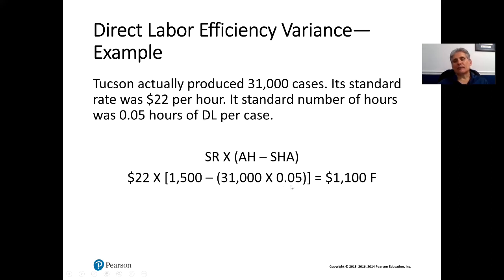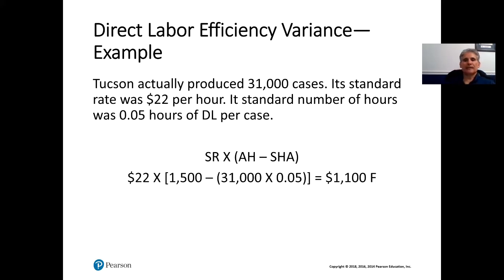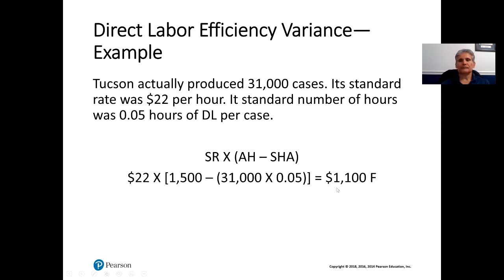Standard hours allowed equals 31,000 cases multiplied by 0.05 hours per case, giving us 1,550 hours. So we were expecting to use 1,550 hours, but the actual hours was 1,500 — we used fewer hours than expected, which means we were more efficient. That difference of 50 hours times $22 per hour gives us $1,100 favorable, because we used less time than anticipated.